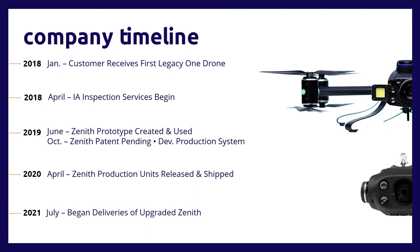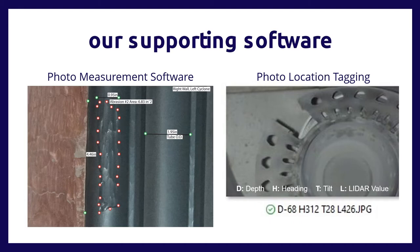With new electronic components inside the three devices — the Zenith, the winch box, and the controller — we also have supporting software for the system. Our photo measurement software allows a user to take a high-resolution photograph and then take defect measurements from inside that photo. Location tagging from Zenith comes with all of those photos in post-processing. For example, with a boiler photo, it gives you the depth from the top of the asset, the heading Zenith is on, the tilt angle of the gimbal, and the LiDAR value showing how far away the object was when the photograph was captured.